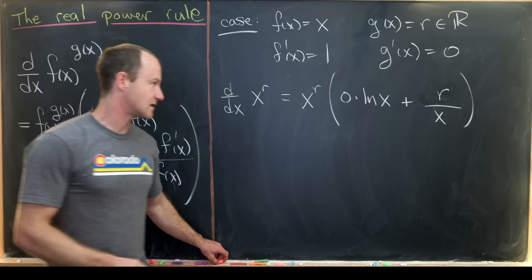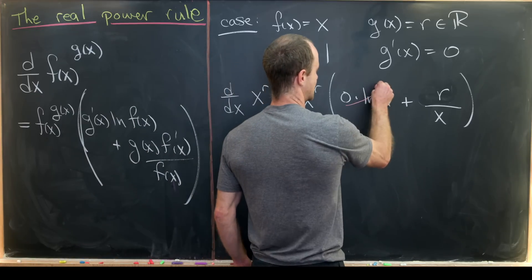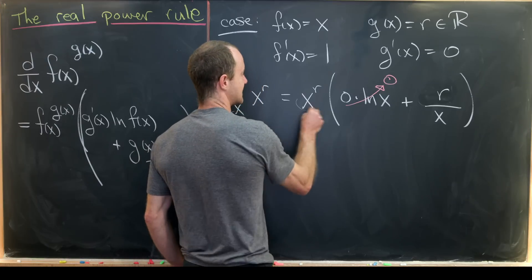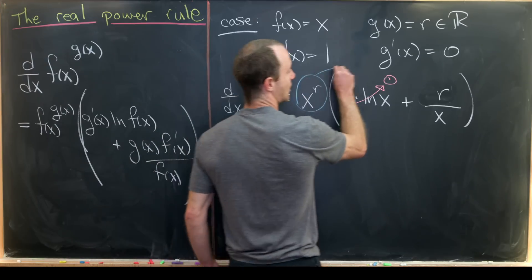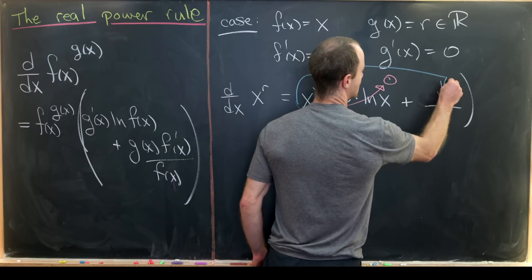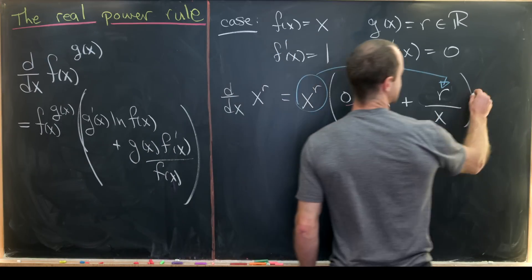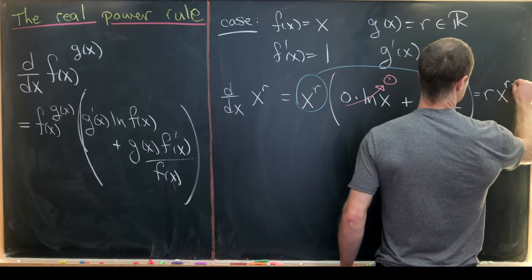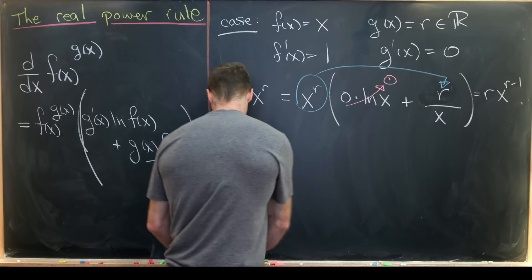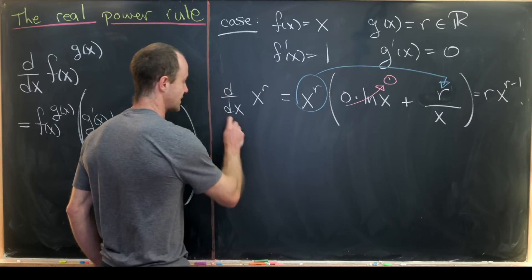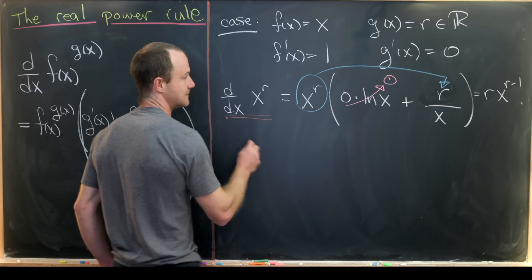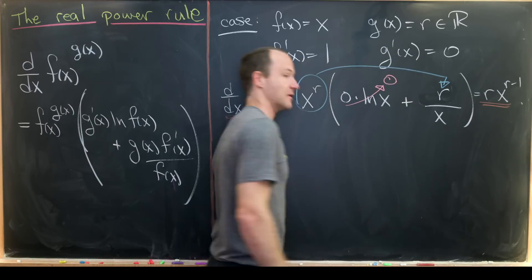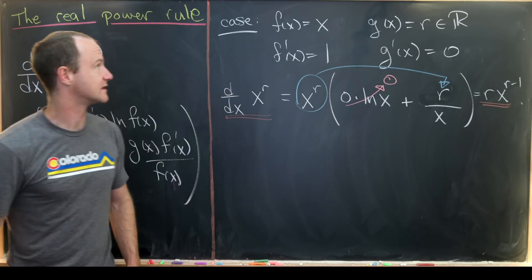The zero term drops out, and distributing x^r through gives us r times x^(r−1). So we've retrieved the standard power rule that you learn at the beginning of calculus class.